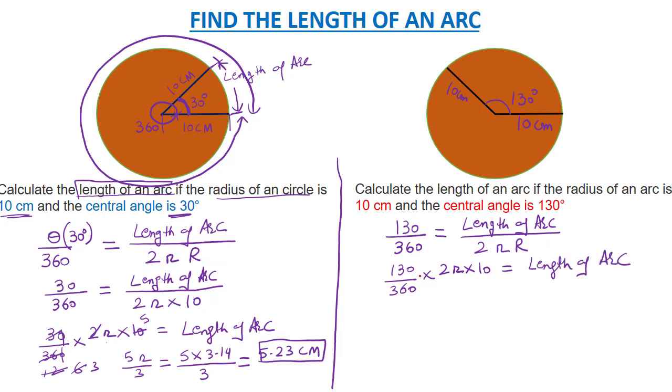After simplification, we are left with 13π times 5/9. After calculation, this is 22.67 cm. So this is the length of the arc for this question.